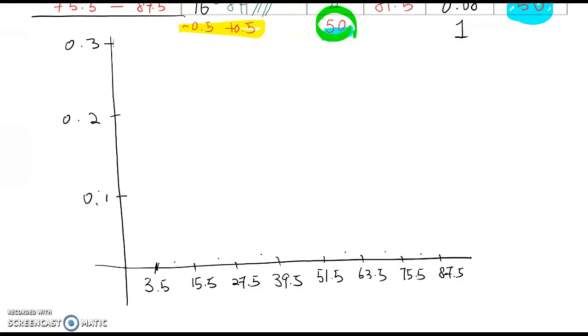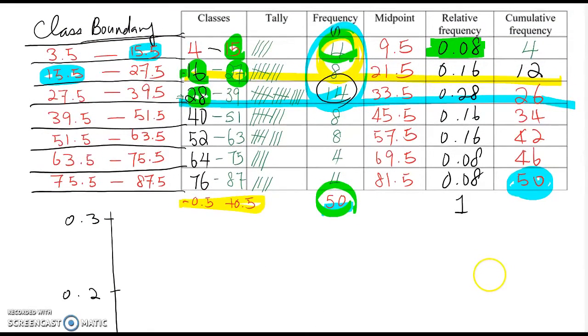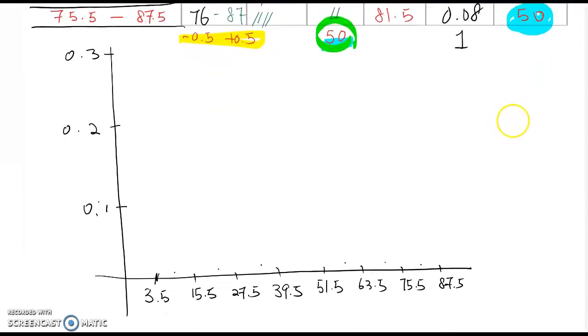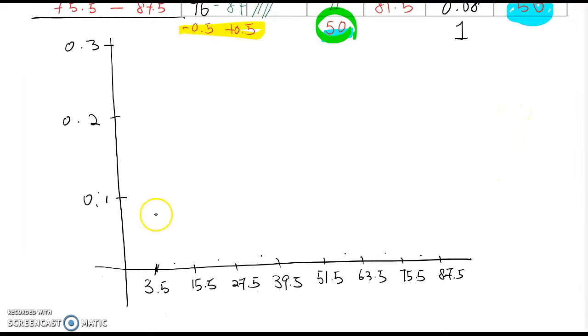Okay, so the first thing is 0.08. 0.08 is almost 0.1, but a little bit lower than 0.1. So I'm going to make around here, and definitely I'm going to put 0.08 here, because this is like an estimating value, not exact scale value here.